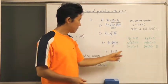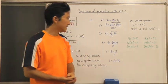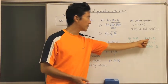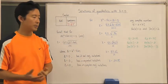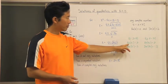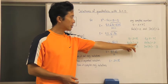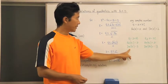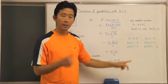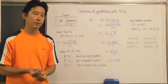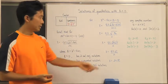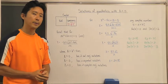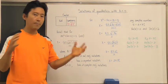Applying this to our two solutions: z sub one is two plus three i and z sub two is two minus three i — notice these are conjugates of each other. The real part of z sub one is two, and the real part of z sub two is also two. The imaginary part of z sub one is three — note it does not include i, just the coefficient — and the imaginary part of z sub two is negative three.